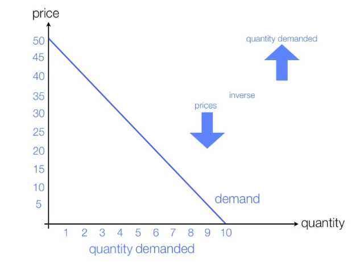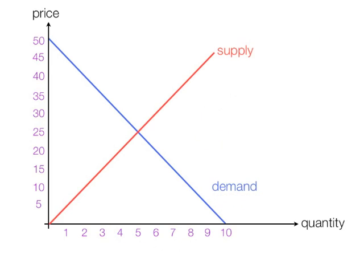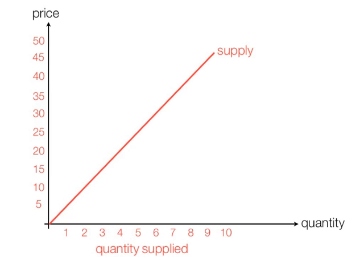Now I'm talking about supply. Quantity supplied is read along the x-axis. So at price 40, suppliers would be willing to supply 8 units, or quantity supplied would be 8. If the price is 20, suppliers would be willing to supply less, and quantity supplied would only be 4.